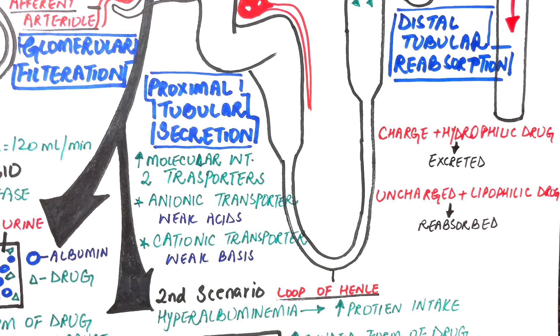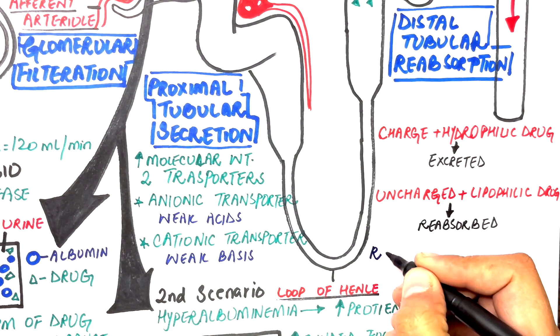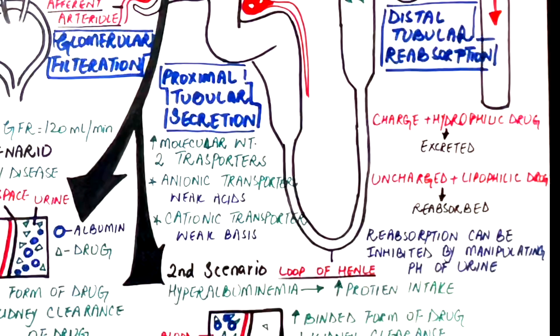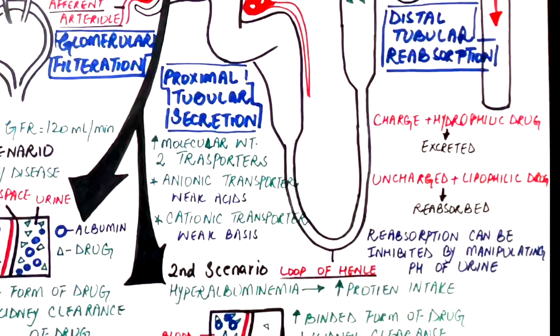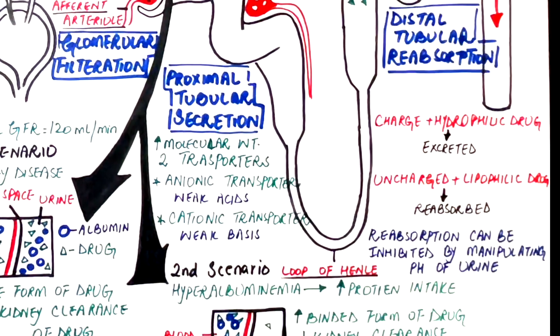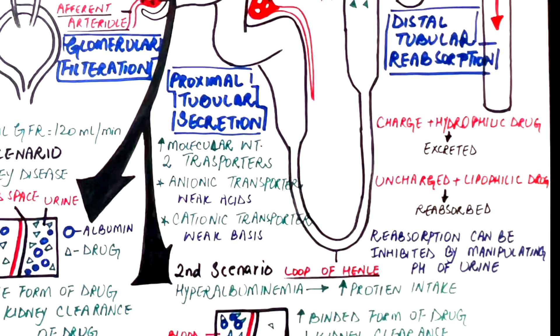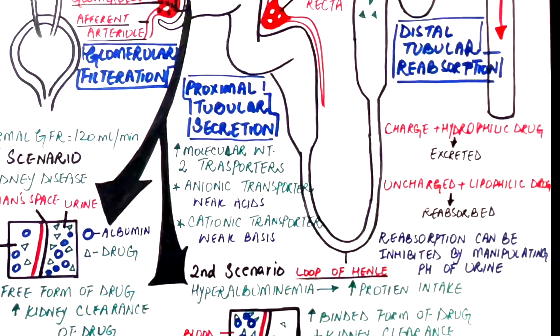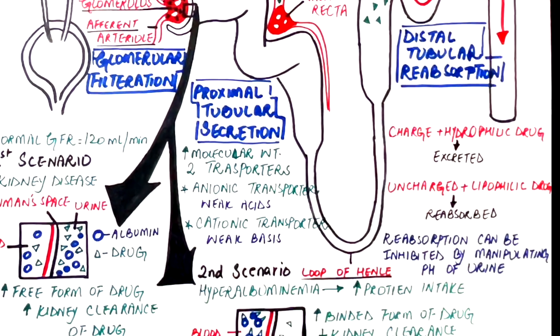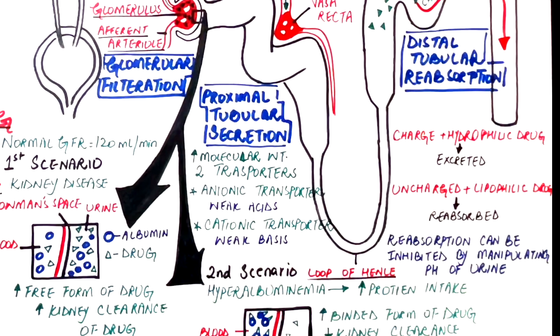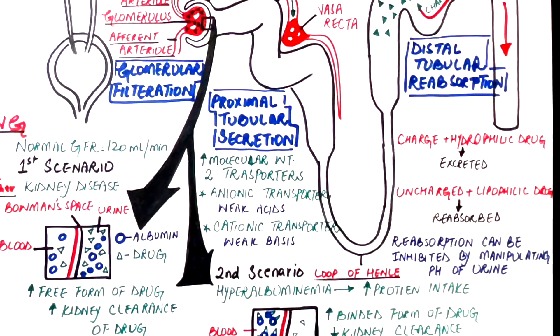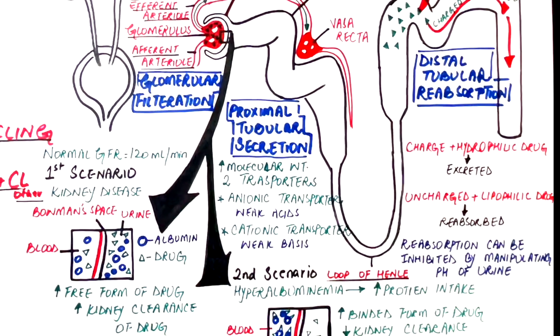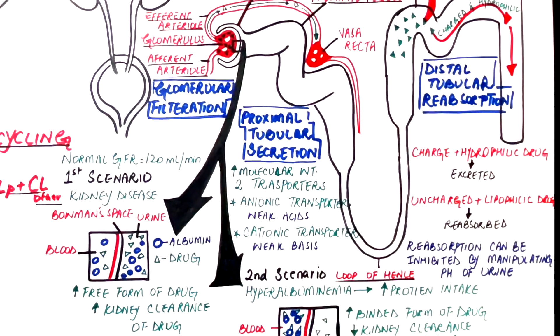This reabsorption of the drug in the distal convoluted tubule can be inhibited by manipulating pH of the urine in such a way that the ionized form of the drug for both a weak acidic or a weak basic drug is increased so that the reabsorption of the drug back into the blood could then be inhibited. Generally, weak acids can be eliminated by alkalinization of the urine whereas weak bases can be eliminated by the acidification of the urine. This process is termed ion trapping.